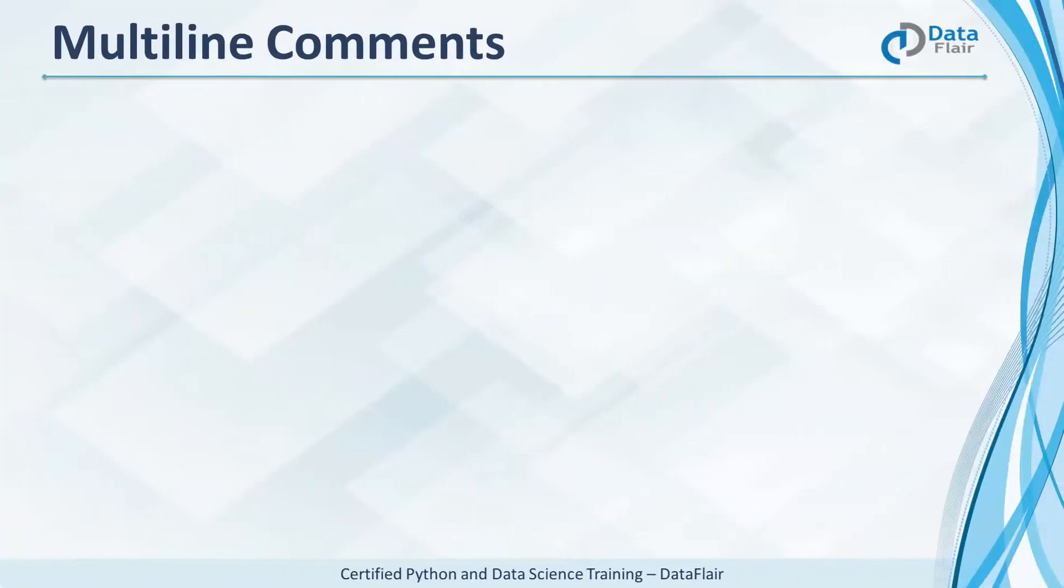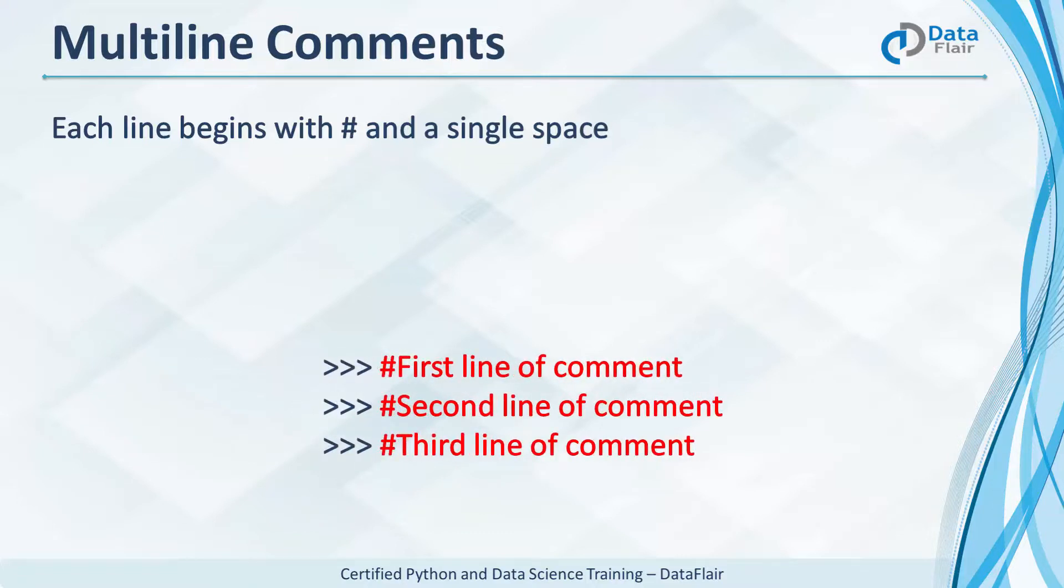But unlike Java or C++, there are no multi-line comments built into Python. You must put a hash sign before each line that is part of the comment. Comments are usually placed before some code to explain it. These are three lines of comments and we've used three hash signs for it.